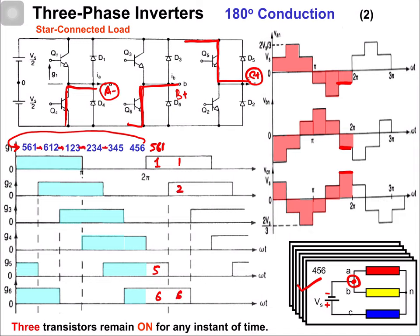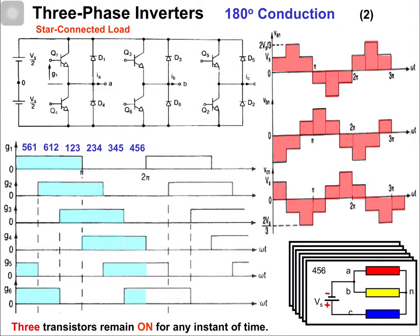We get these output phase voltage waveforms of the three phase 180 degree conduction inverter. All of these waveforms are 120 degrees displaced with respect to each other, so we get three balanced voltage waveforms with the help of these gating signals.